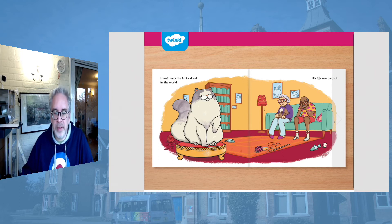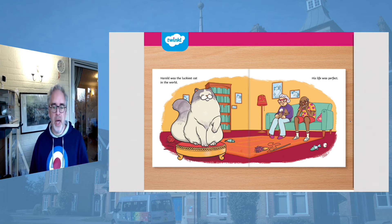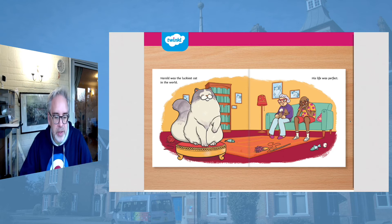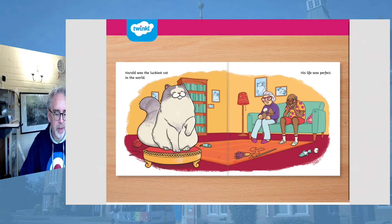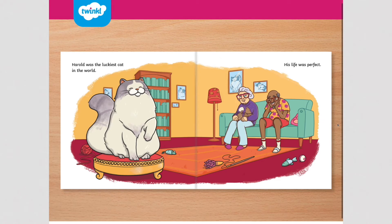Harold was the luckiest cat in the world. His life was perfect. Have a little look at this picture — how many different toys can you see for Harold to play with? I can see a mouse, a little feather chaser, a fish, a ball, and a big ball of wool as well. That's one, two, three, four, five — five toys for Harold to play with.